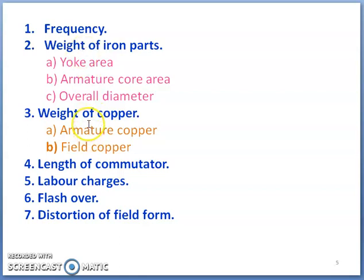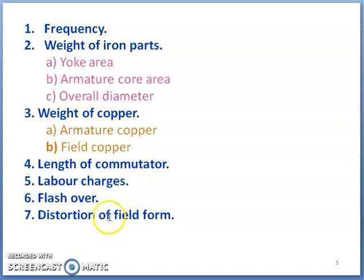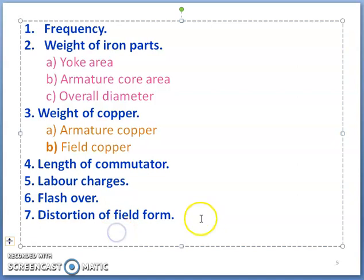Now let us discuss the remaining four factors: weight of copper in both armature and field sections, what happens to length of commutator based on number of poles, what happens to labor charges, and flashover and distortion of field form.